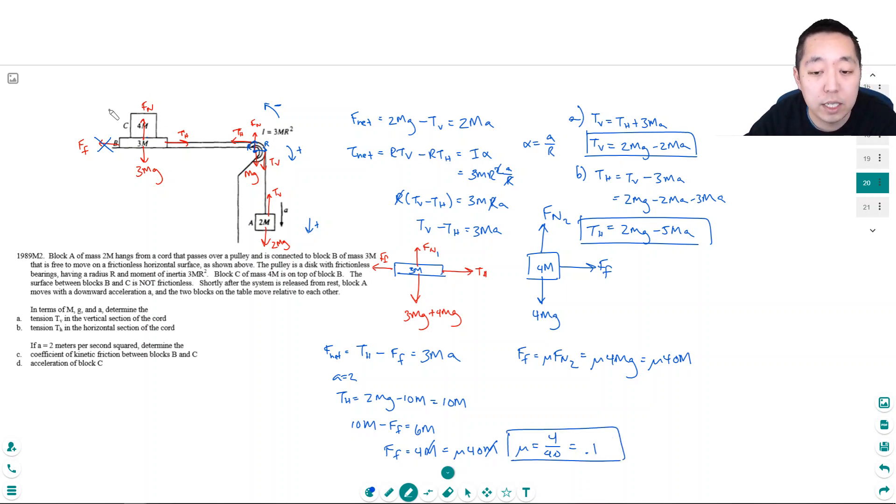And then the acceleration of block C... Force of friction equals 4M times acceleration. The M's cancel. So A equals mu times 40 divided by 4. Because force of friction is just the net force in the X direction. That equals 10 mu. 10 times 0.1 equals 1 meters per second squared.